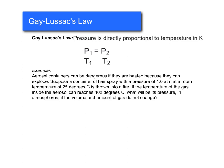If the temperature of the gas inside the aerosol can reaches 402 degrees Celsius, what will be its pressure in atmospheres if the volume and the amount of gas do not change? Alright, so our initial pressure is 4.0 atmospheres. That's our P1. And our initial temperature, our T1, is 25 degrees Celsius. Again, remember we need to convert that to Kelvin. So that is 298 degrees Kelvin. And our final pressure is what we're looking for. So P2 is just going to be X. And T2 is 402 degrees Celsius, which we again need to convert to Kelvin. So that's 675 degrees Kelvin.